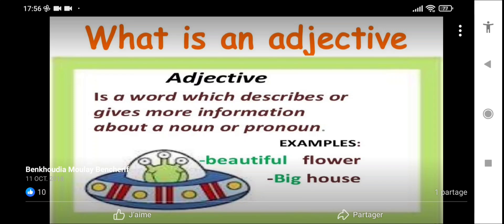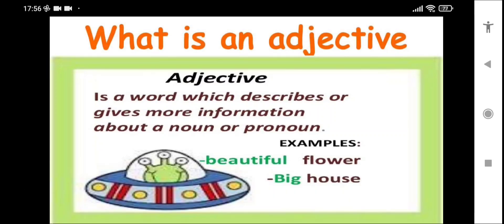The adjective gives you more information about the noun or the pronoun. Here there is an example: beautiful flower, big house. Beautiful is an adjective. Here it describes that the flower is beautiful. Big house - here it describes that the house is big. Big is an adjective.